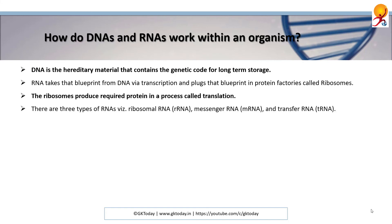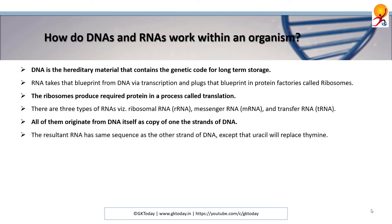There are three types of RNAs: ribosomal RNA or rRNA, messenger RNA or mRNA, and transfer RNA or tRNA. All of them originate from DNA itself as a copy of one of the strands of DNA. The resultant RNA has the same sequence as the other strand of DNA, except that uracil will replace thymine.